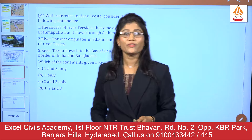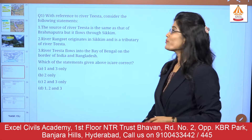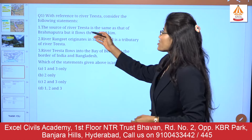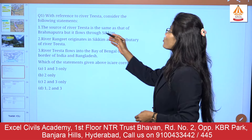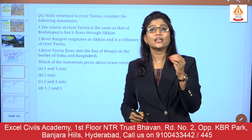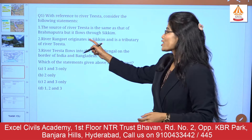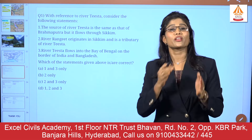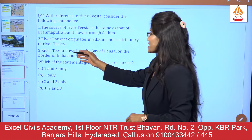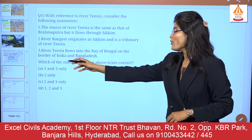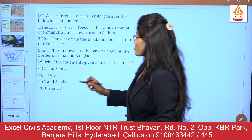Now let's solve a few UPSC-style questions. First question — with reference to river Tista, consider: (1) the source of river Tista is the same as that of the Brahmaputra but it flows through Sikkim; (2) river Rangit originates in Sikkim and is a tributary of the river Tista; (3) river Tista flows into the Bay of Bengal on the border of India and Bangladesh. Which of the statements given above is/are correct?